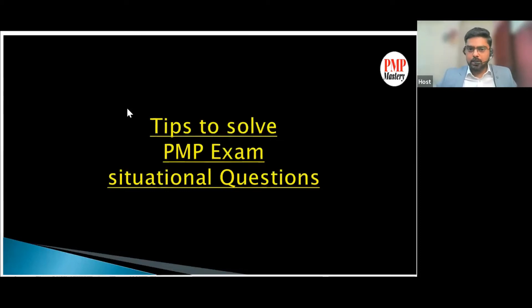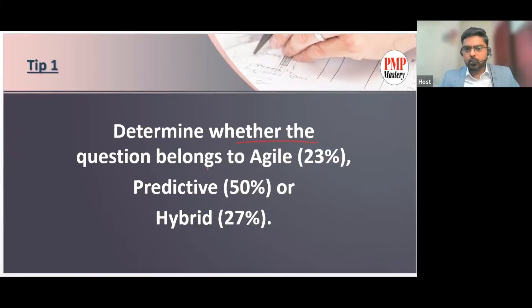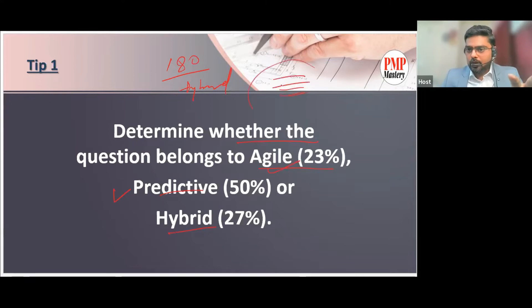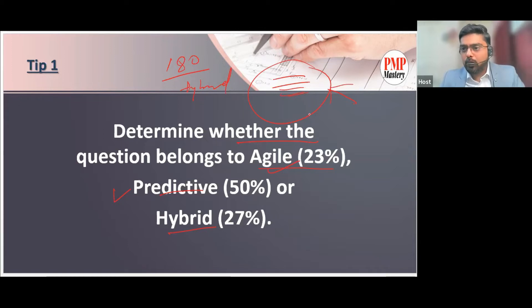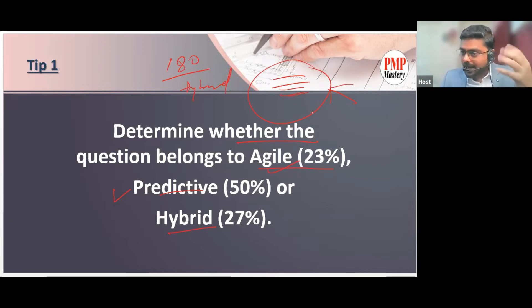Let's discuss tips to solve PMP exam situational questions. First, determine whether the question belongs to Agile, Predictive, or Hybrid. Questions will be a combination of Agile, Predictive, or Hybrid. As soon as you see the question, the first thing in your mind is to identify which area it belongs to — whether it is based on Agile, traditional, or hybrid, meaning a mix of Agile and traditional. Once you identify the methodology, you can adopt the right mindset.